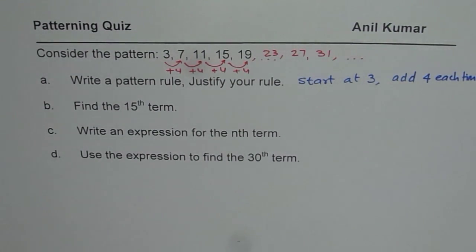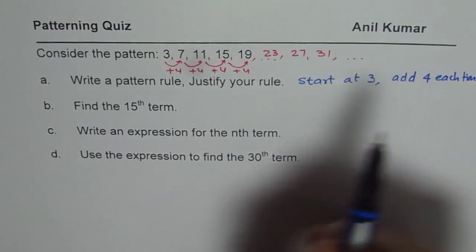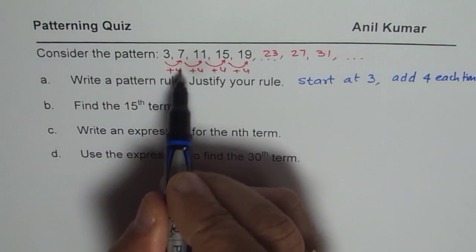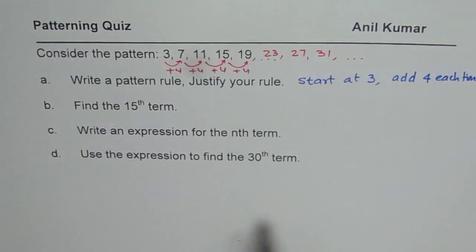How do I justify it? Well, we can apply the rule. Start at 3 and add 4. So, 3 plus 4 we found is 7. 7 plus 4 is 11. 11 plus 4 is 15. Likewise, we can continue.